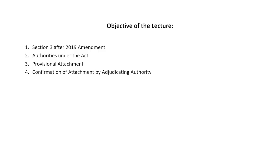I am taking up the course titled as White Collar Crimes and in today's session we will be taking the Prevention of Money Laundering Act further and discussing Part 2. The objectives for today's session are: to continue discussing Section 3 after the 2019 Amendment Act, Authorities under the Act, Provisional Attachment, and lastly Confirmation of Attachment by the Adjudicating Authority.